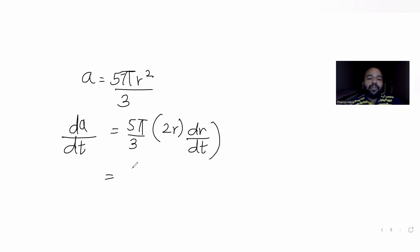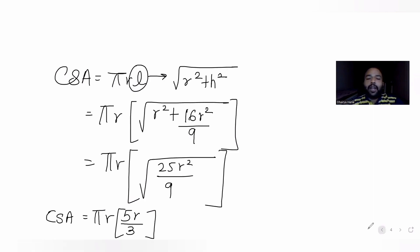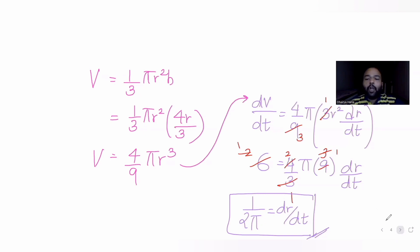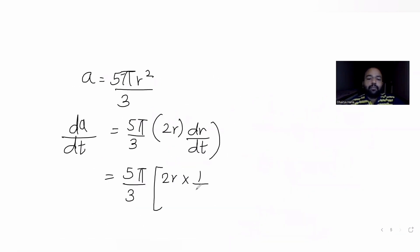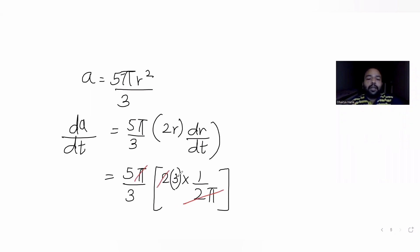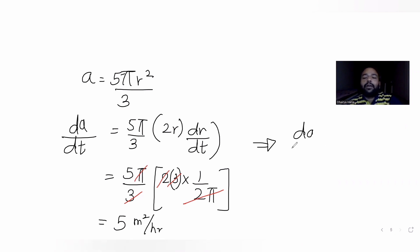Differentiating A with respect to time, dA/dt equals (5π/3) times 2r dr/dt. We already know dr/dt equals 1/(2π). Substituting, and also substituting r equals 3 meters when height is 4 meters, the 2 and 2 cancel and the π values cancel.